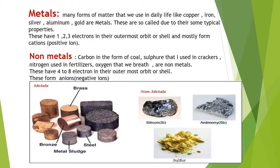There are many forms of metal that we use in daily life, like copper, iron, silver, aluminum, gold, etc. These are metals and they have some typical properties. Metals mostly have one, two, or three electrons in their outermost orbit or shell, and they form cations.